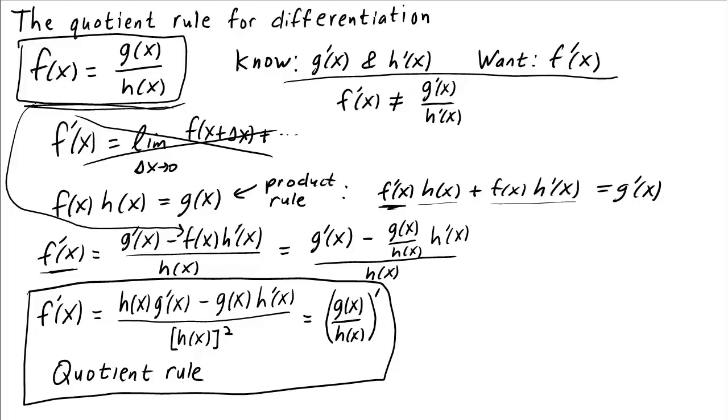It might be hard to remember which term has the minus sign in front of it. But you can keep it straight by thinking of the special case of f of x equals g of x over h, where h is just a constant number.